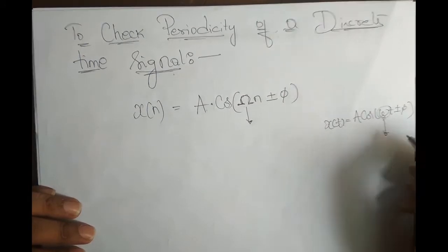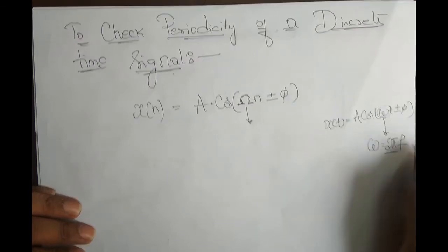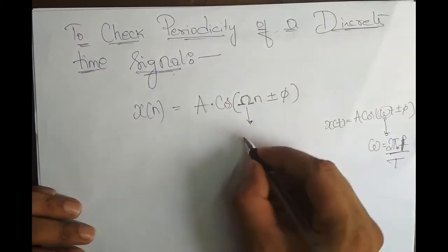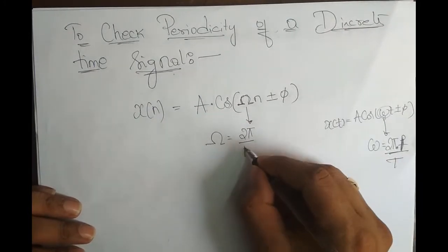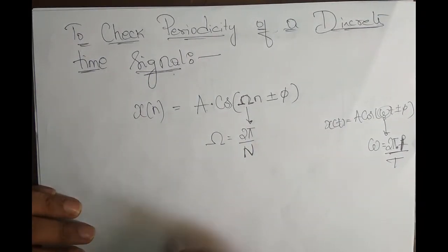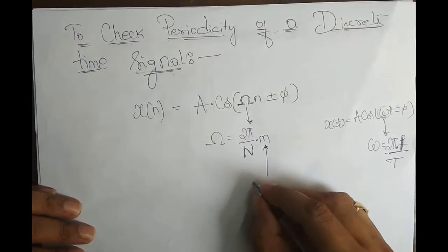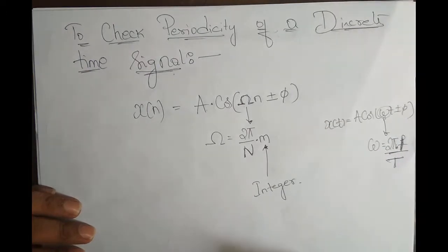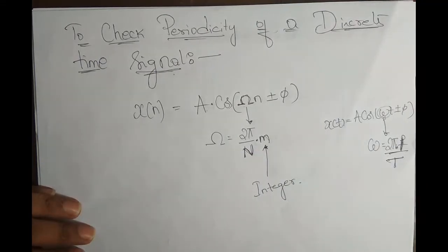So what was omega for continuous time? Omega was 2 pi f, and f equals 1 by T, so omega equals 2 pi by T. Whereas here for discrete time, omega is equal to 2 pi by capital N, where instead of T it is capital N — the fundamental period of a discrete time signal.